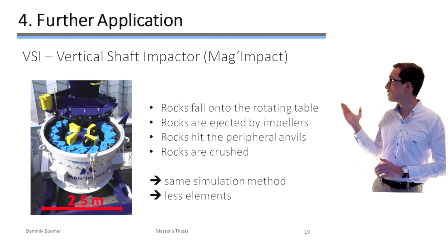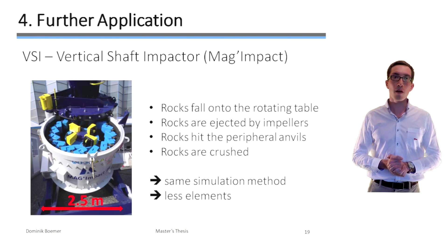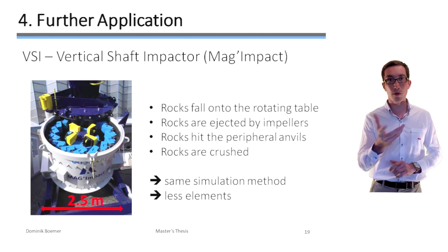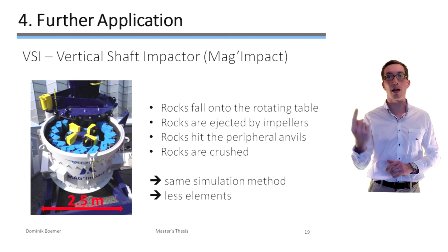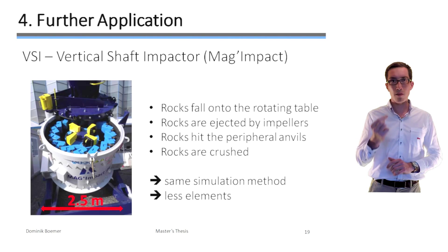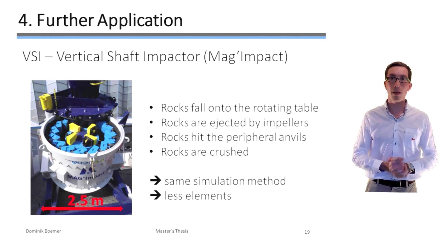On the picture you can see these yellow parts which are called impellers. These impellers are attached to a table which rotates at about 1,000 rotations per minute around the vertical axis. The rocks which fall onto this table are ejected by the impellers against the peripheral anvils and they are simply crushed.